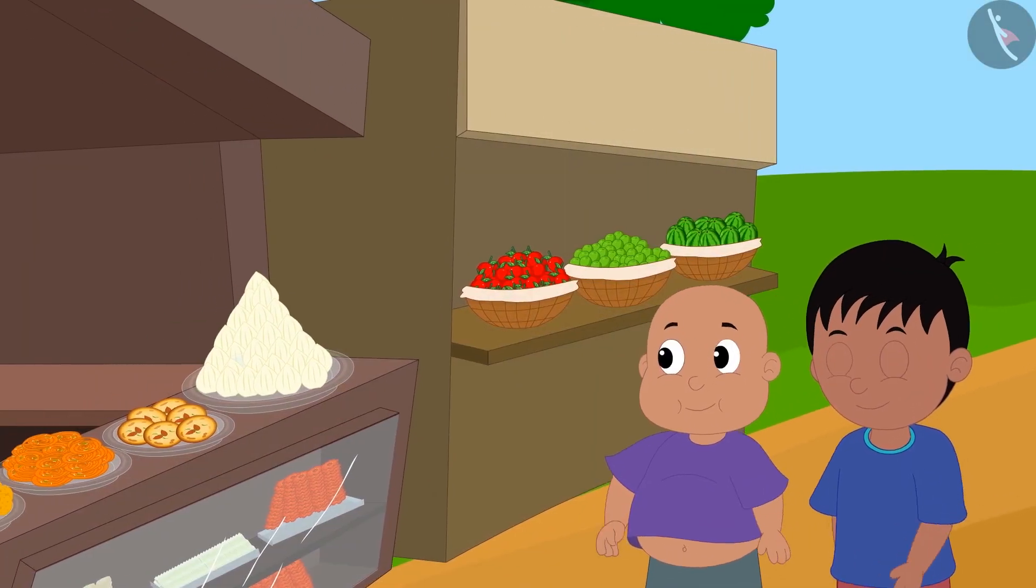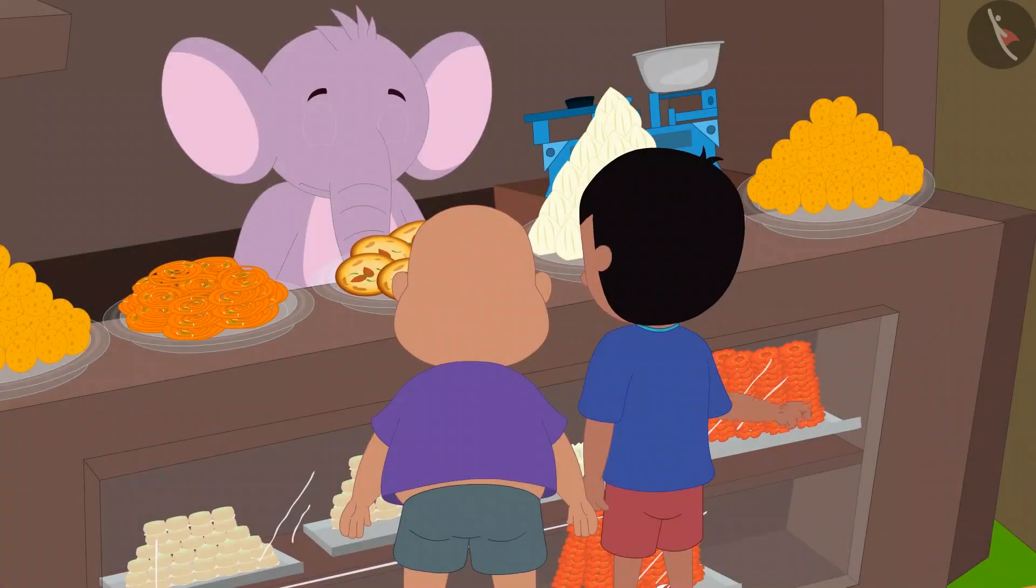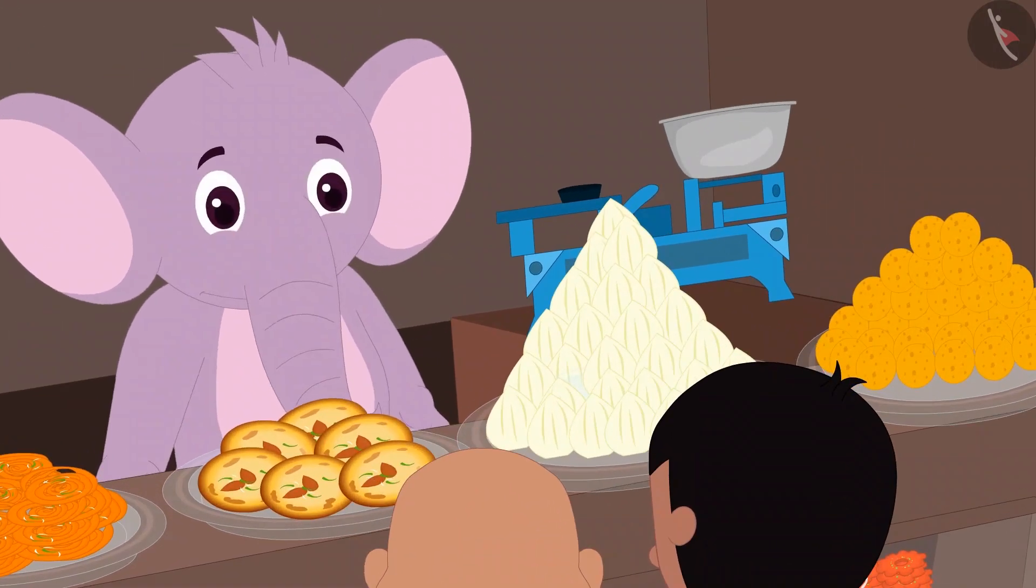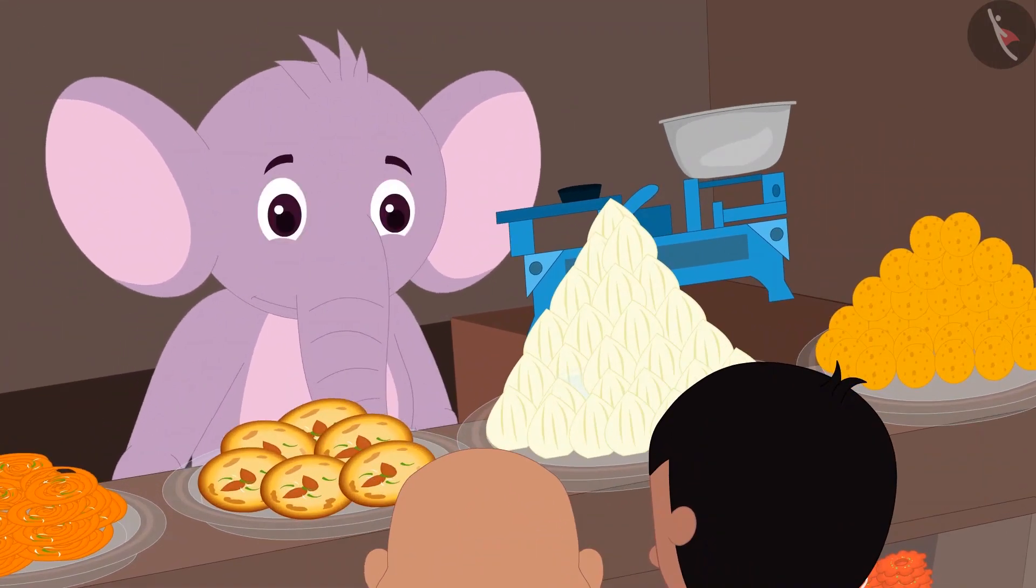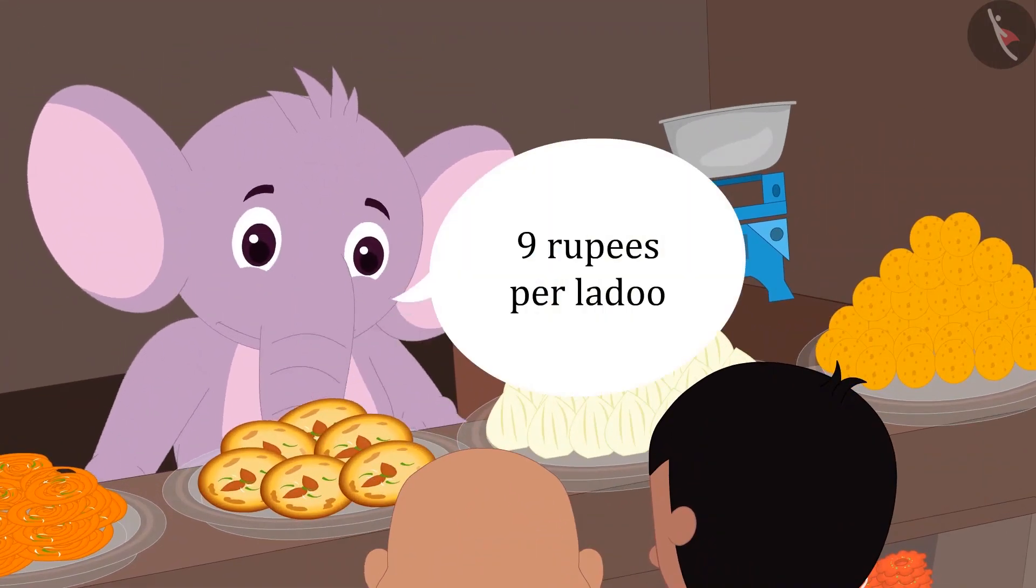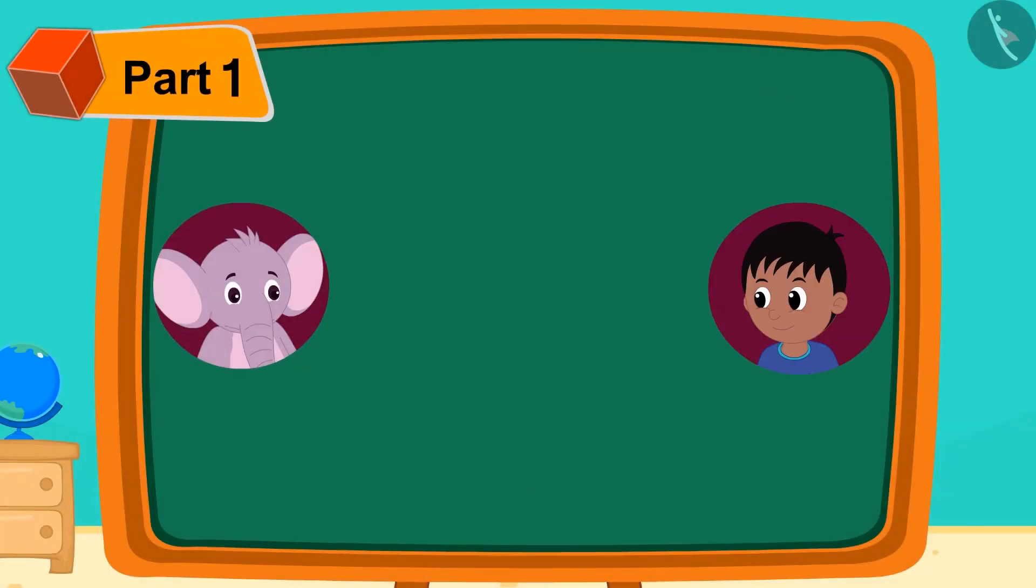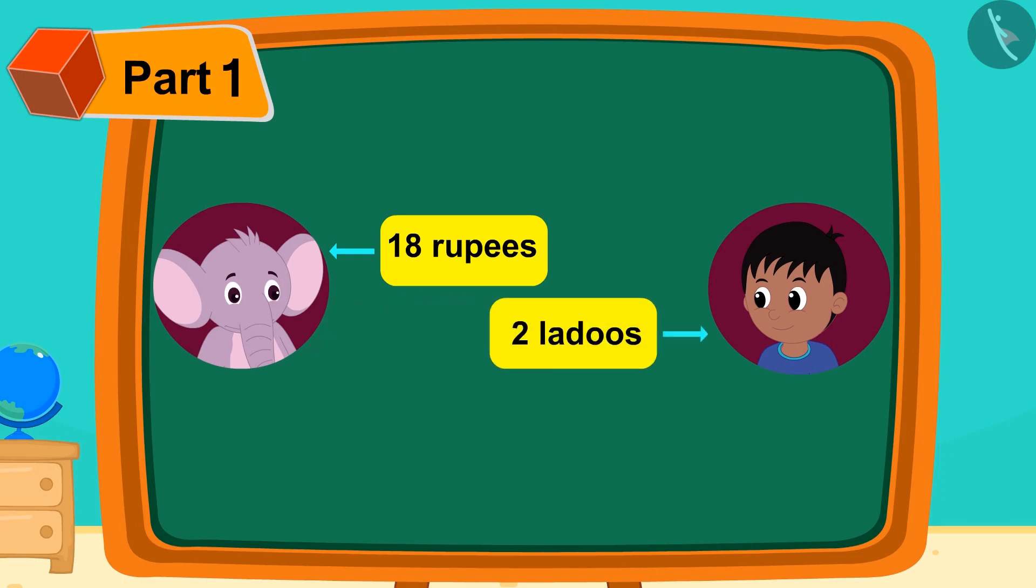Raju and Bablu are roaming in the market. Raju asks Appu the price of laddu. Appu told Raju that the price of laddu is 9 rupees per laddu. Raju quickly gave 18 rupees to Appu and took two laddus.